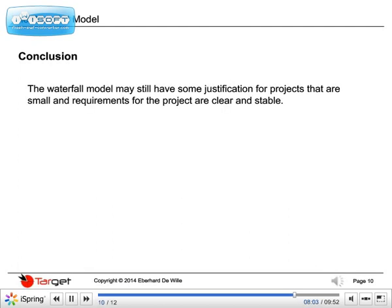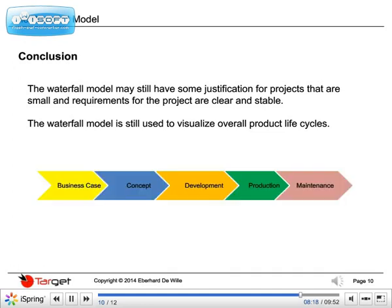The use of the waterfall model may still have some justification for projects that are small and where requirements for the project are clear and stable. The waterfall model is still used to visualize overall product life cycles, although you will rather find a chevron type of visualization than a cascade. This is simply because a chevron diagram is very common and in the same way sequential as a cascade would be. This use of the model still makes sense.